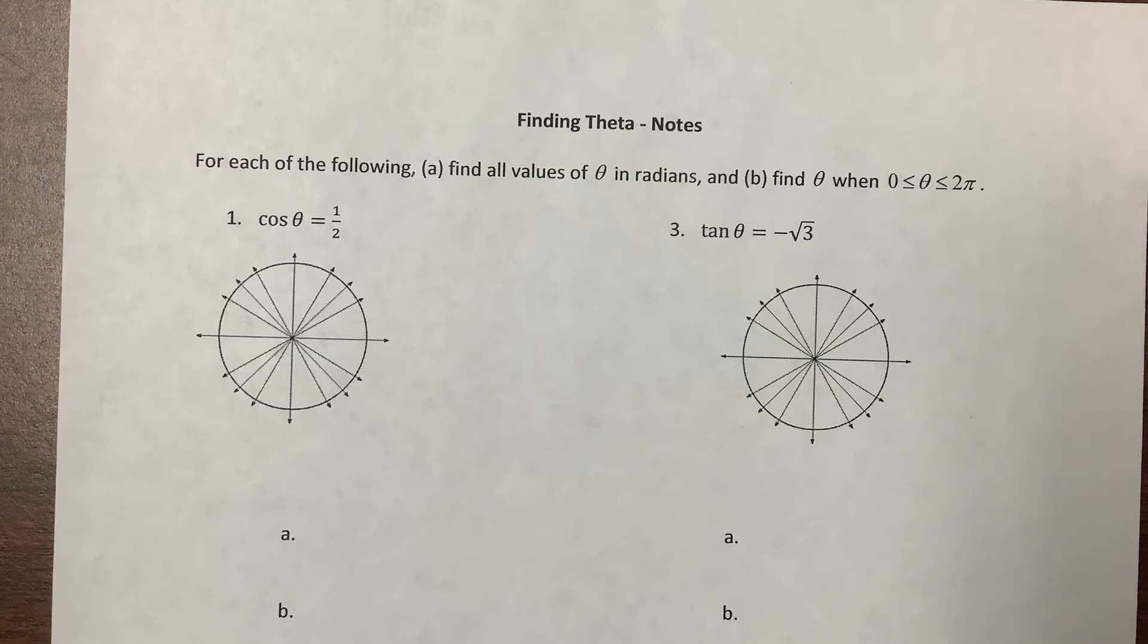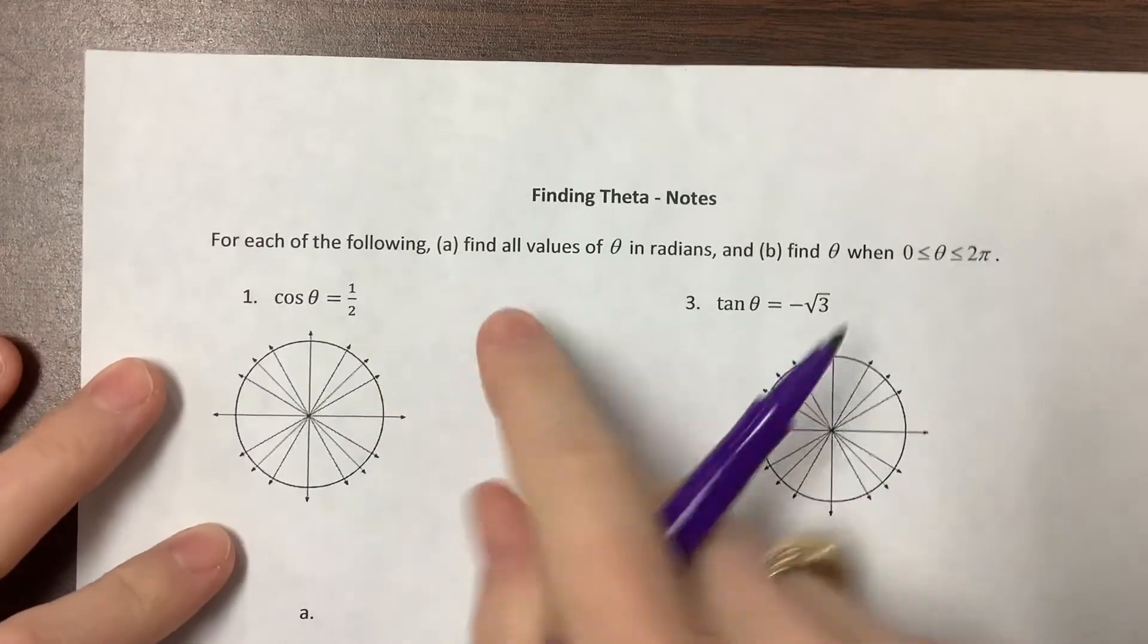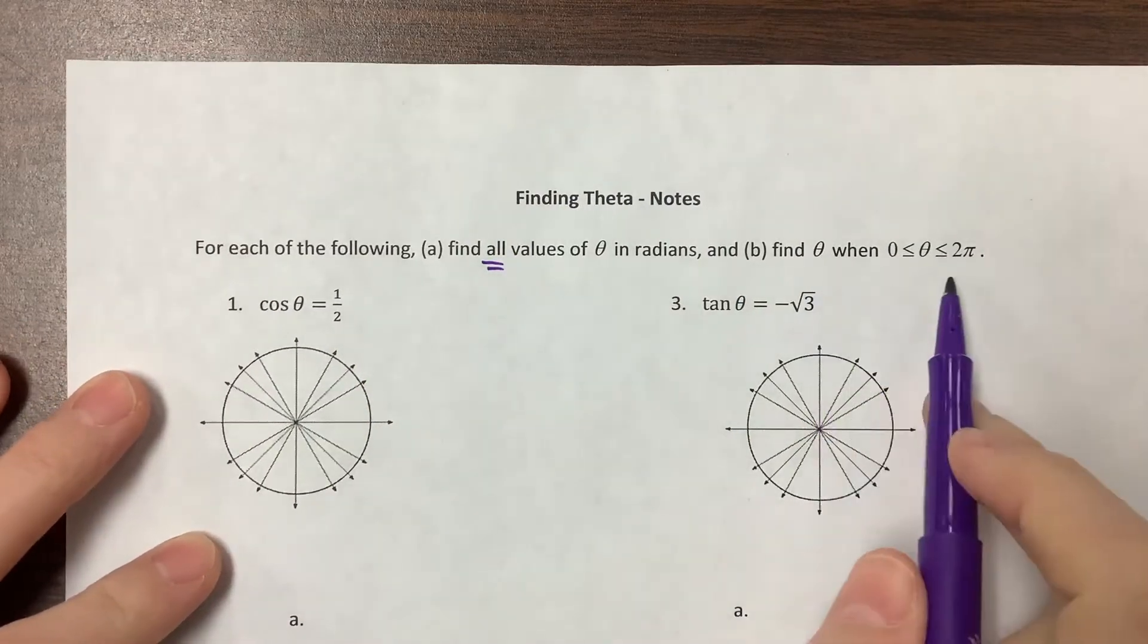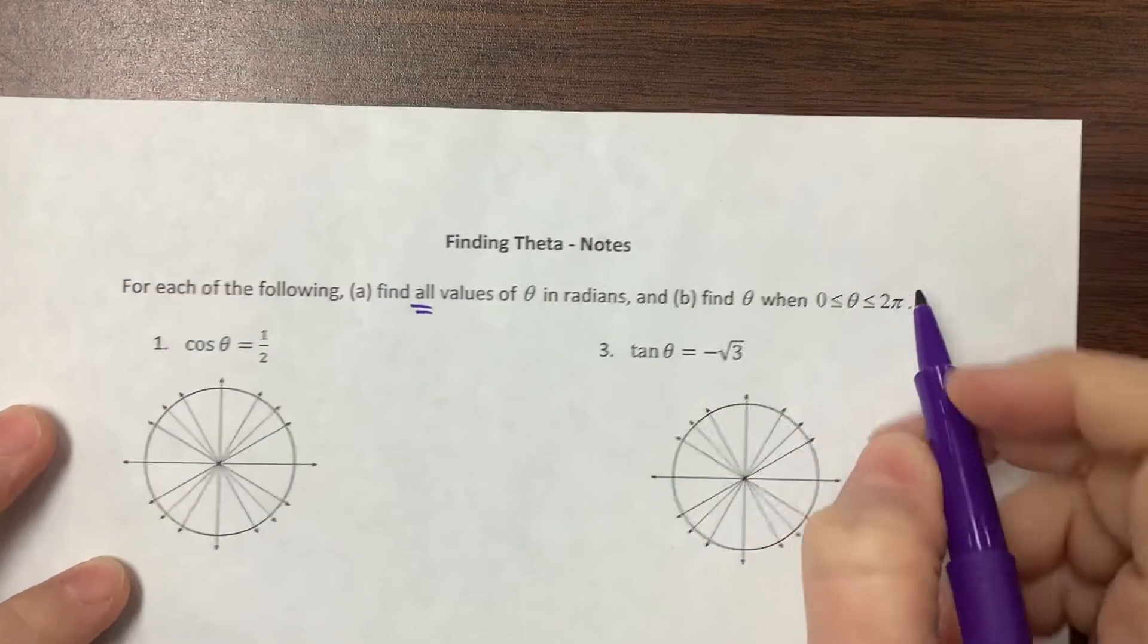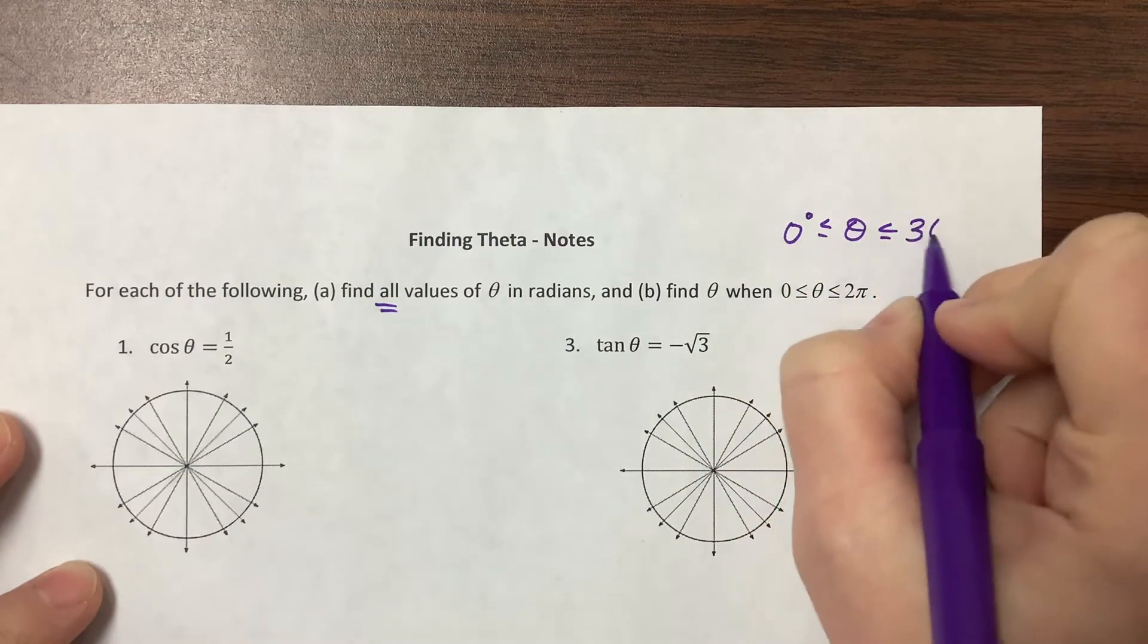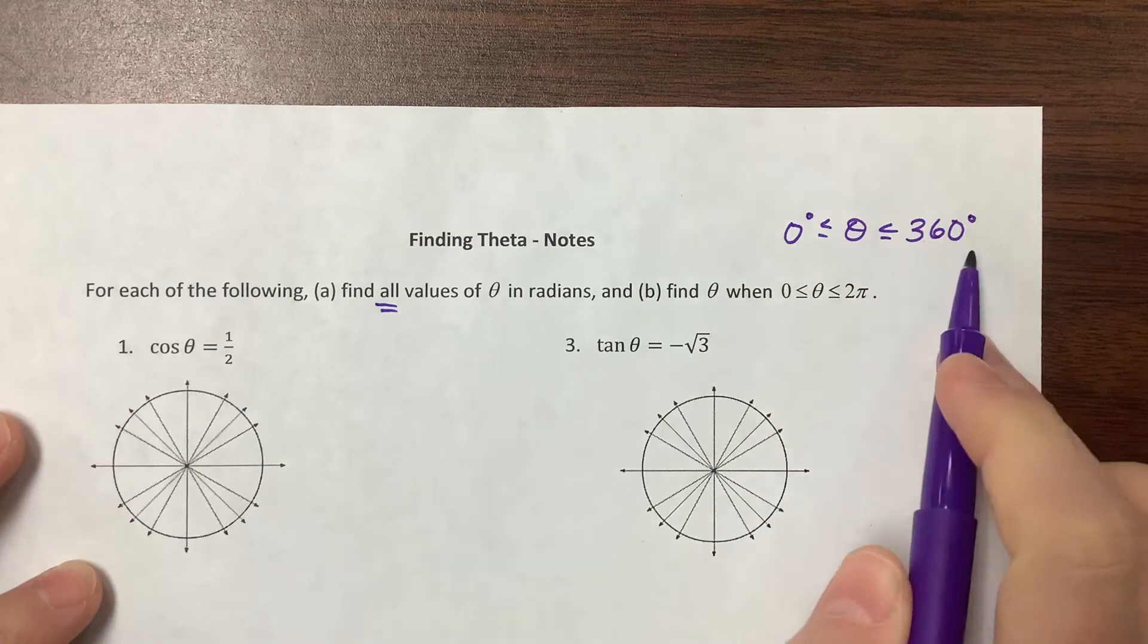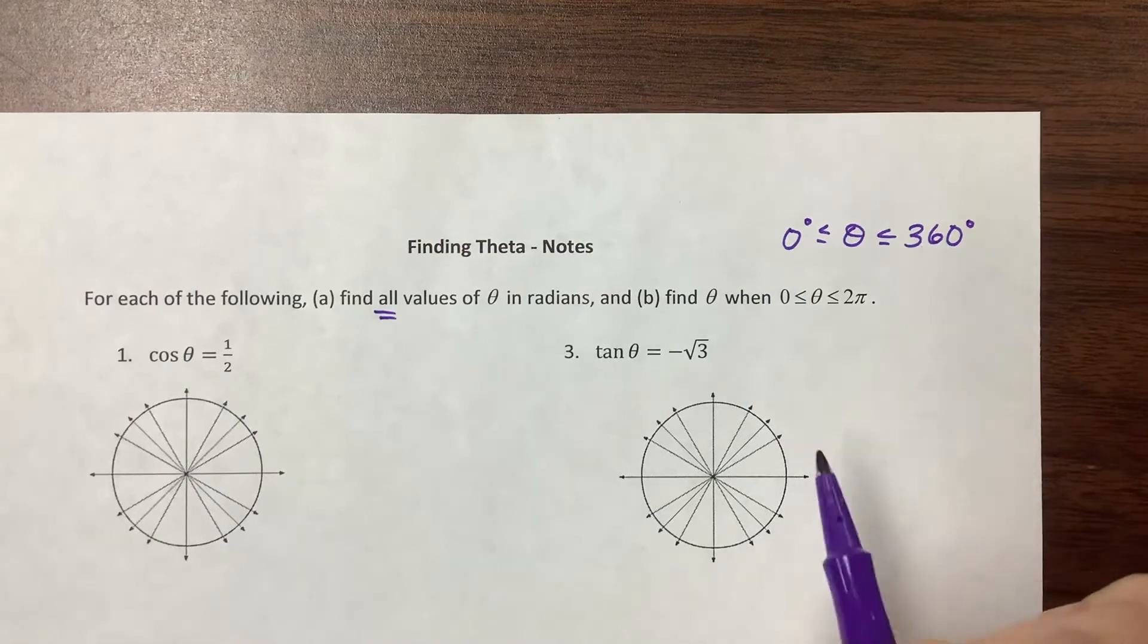In this video, we're going to use the unit circle to help us figure out the values of theta. There's two basic ways that they'll ask this question. They could either ask to find all values, or they could ask to find it in a particular interval. They might put it in radians, like I did right here, or I might say that 0 degrees is less than or equal to theta, which is less than or equal to 360 degrees. We like to live in radians, unless otherwise indicated.